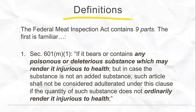Right away when we look at the definition of adulteration in Section 601M, we're going to see a lot of similarities to what we saw with the Food and Drug and Cosmetic Act's definition. Remember, the Pure Food and Drug Act and the Federal Meat Inspection Act were passed on the same day in 1906, going through the same process and same committees, so it's not surprising that we see similar language. Just as the FDA definition of adulteration is incredibly broad and complex, so is the meat side. There are nine parts to this definition, and we'll focus on one.